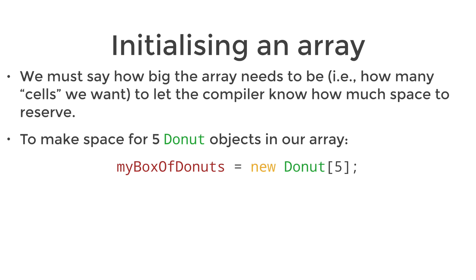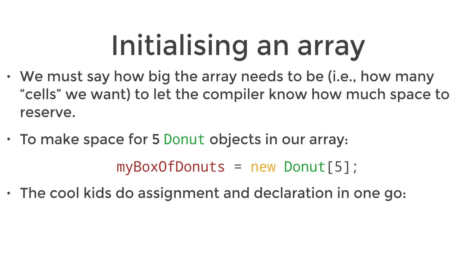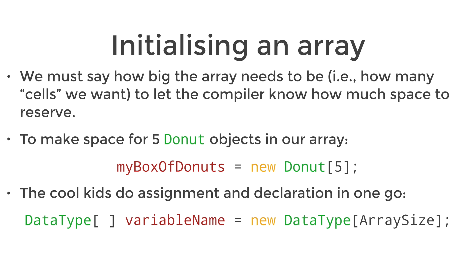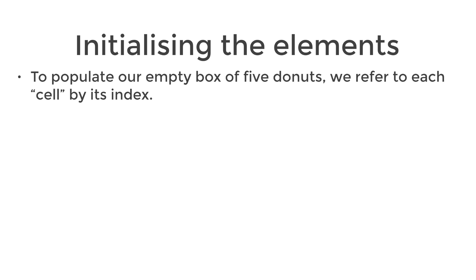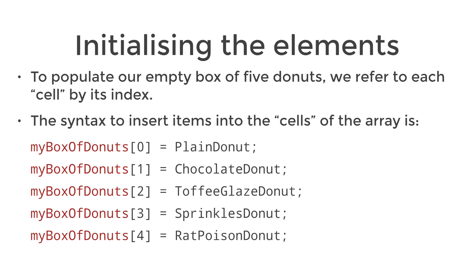With our donut array we would initialize it as follows: myBoxOfDonuts equals new donut, and then in the square brackets the array size. Now that we've got an array of size five we still have to populate it with something, and the way we go about populating an array is by assigning a value to a particular element at a given index. So myBoxOfDonuts[0] equals plain donut — we've just assigned the plain donut item to the first element in the array.